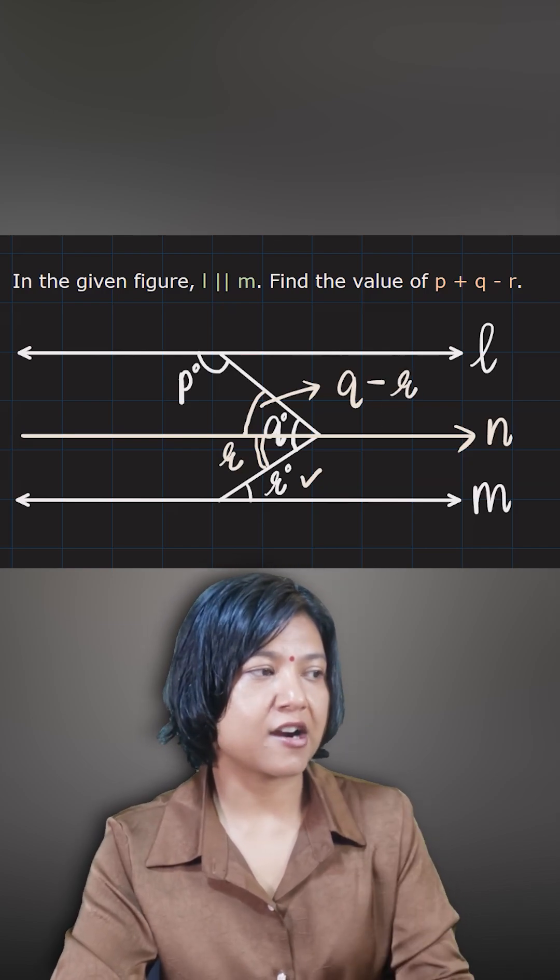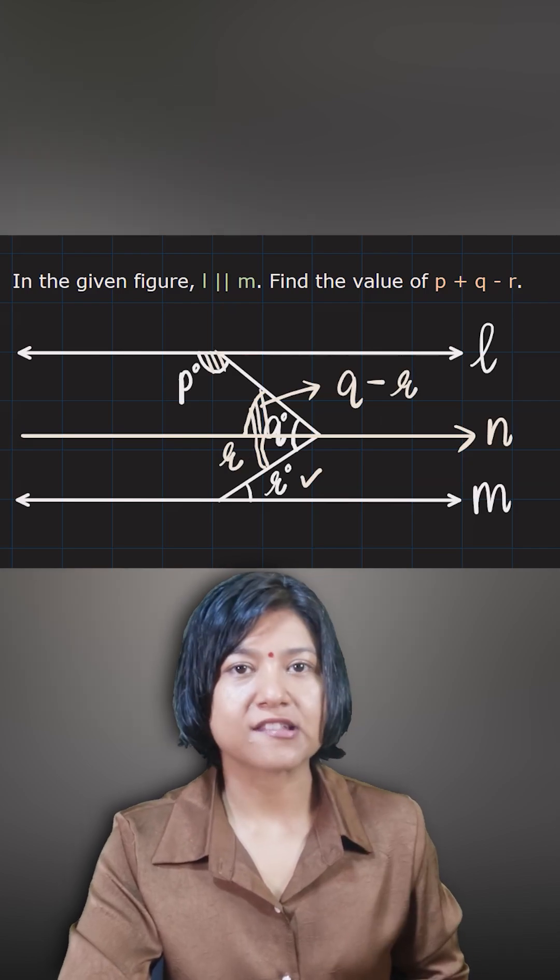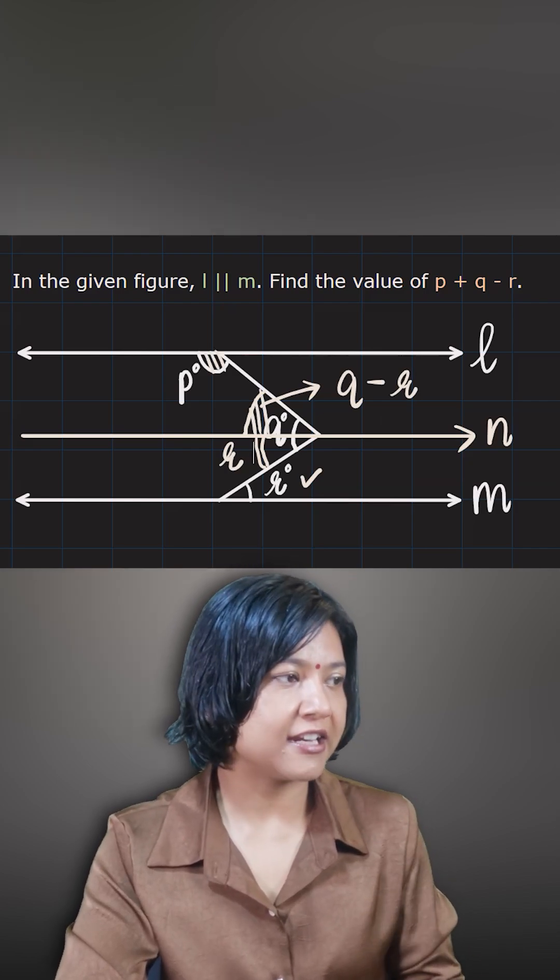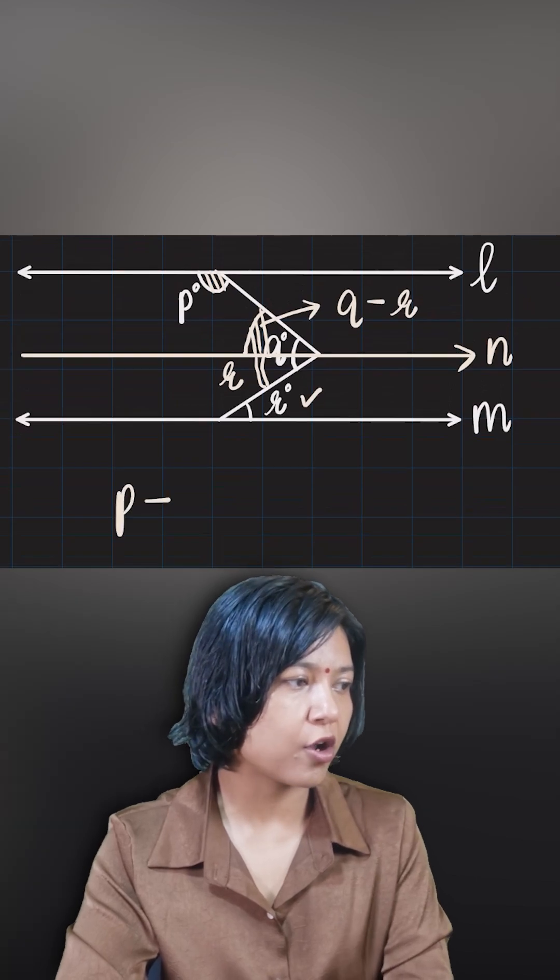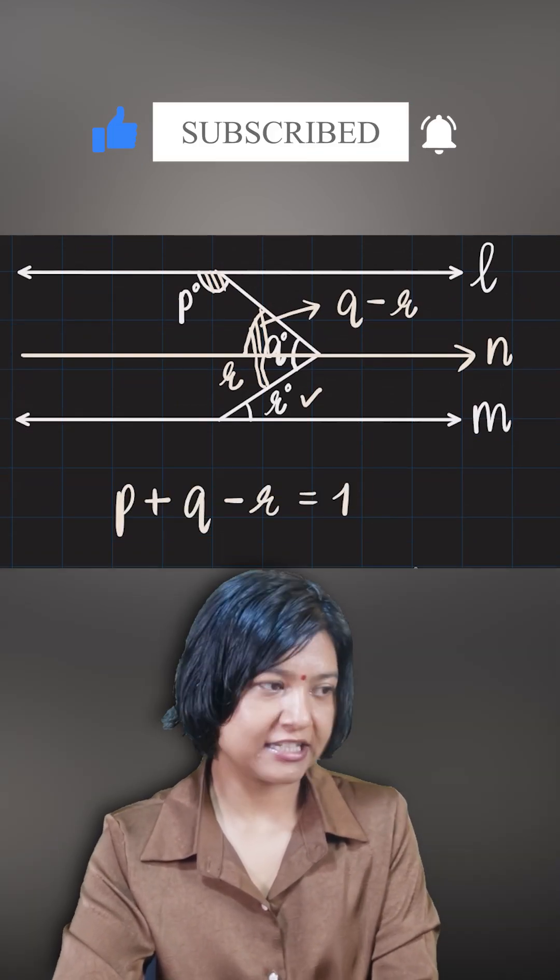So next what happens? You have your p and q minus r. If you look at these two angles, these two angles lie between two parallel lines. Any two angles that lie between two parallel lines will always add up to 180. Hence, the answer is 180 degrees.